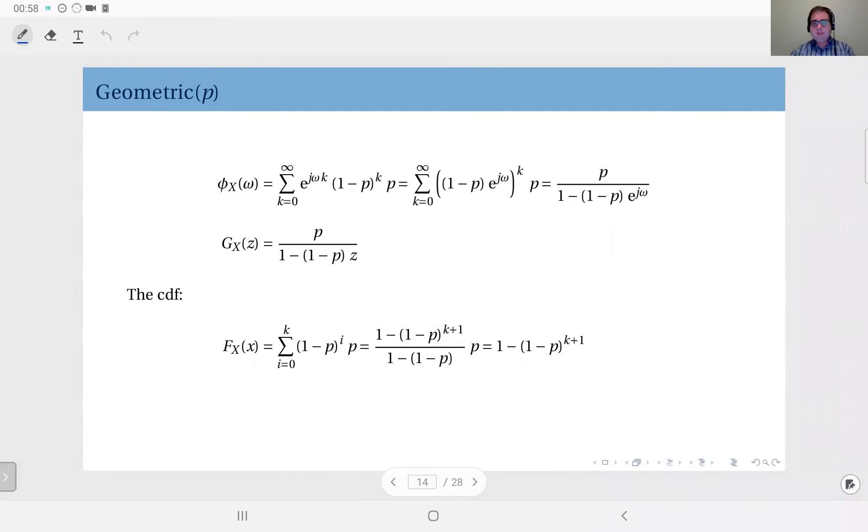Right, so we have derived the first and second moments of the geometric distribution and also the variance. At this point we can derive the characteristic function, and that is again the expected value of e to the power jω.